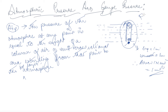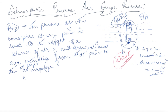Pressure is force divided by area. The force is developed due to the weight of layers one above the other, because the atmosphere is made up of gases and gases have weight. So the gas applies a force downward, and the total force divided by unit cross-sectional area gives you the pressure — this is known as atmospheric pressure.